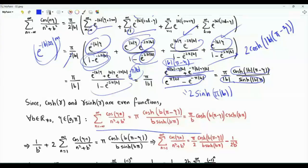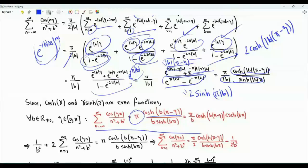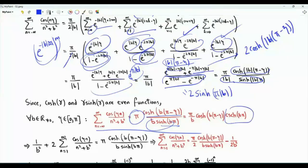The result is: for non-zero real b and eta in [0, π], the summation n from minus infinity to infinity of cos(eta·n) / (n² + b²) equals π times cos(b·(π − eta)) divided by b·sinh(b·π). Of course, 1/sinh can be written as cosech.